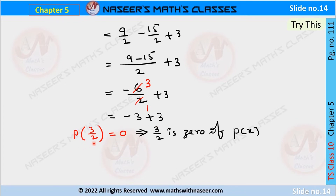Therefore, p of 3/2 is equal to 0. So we can say that 3/2 is a zero of p of x.